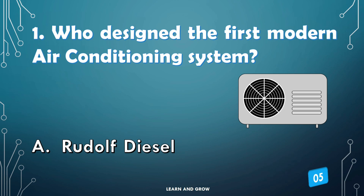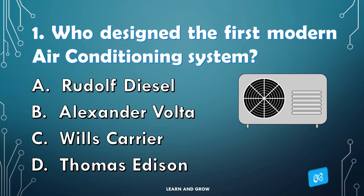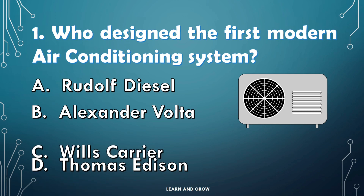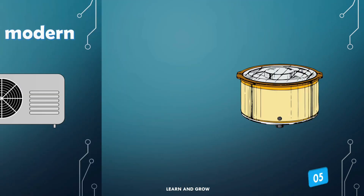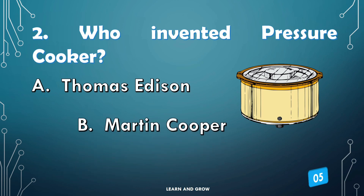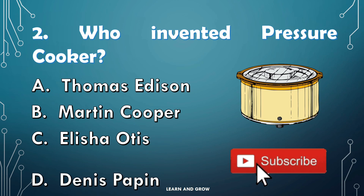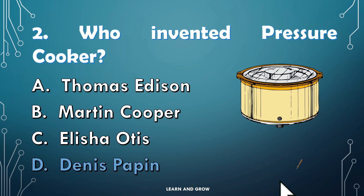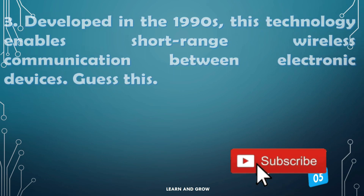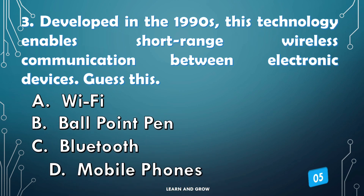Who designed the first modern air-conditioning system? The right answer is option C: Willis Carrier. Who invented the pressure cooker? The right answer is option D: Denis Papin.